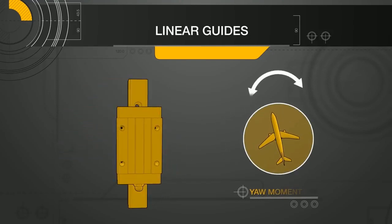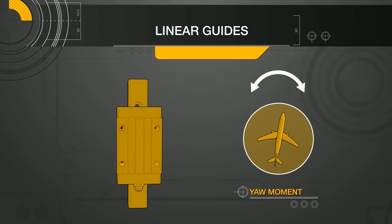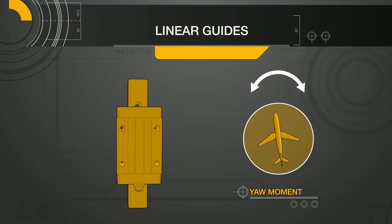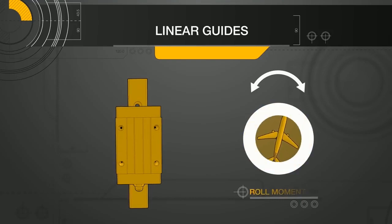The next moment is the yaw moment. The yaw moment is a horizontal tilt or rocking side to side along the axis of travel. This would commonly result from off-center lateral loading.